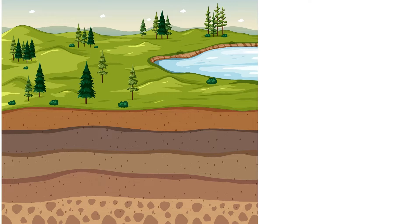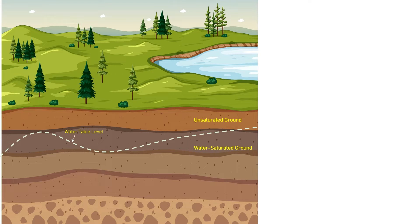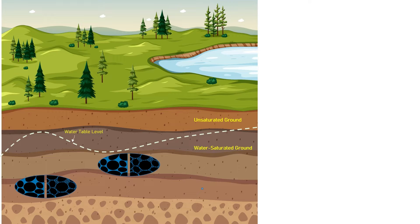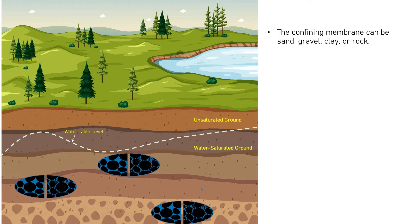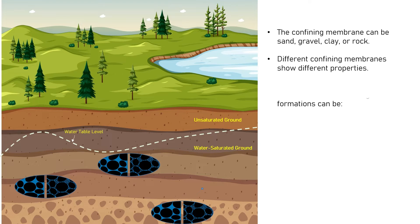Let's consider a ground cross-section with the following terrain. We will assume the water table of this terrain as follows. A water table describes the boundary between water-saturated ground and unsaturated ground. Now, below the water table, there are small water pockets called geological formations or water-bearing formations as shown in the figure. This water is confined within gravel, sand, or clay. Different confining membranes show different characteristics.